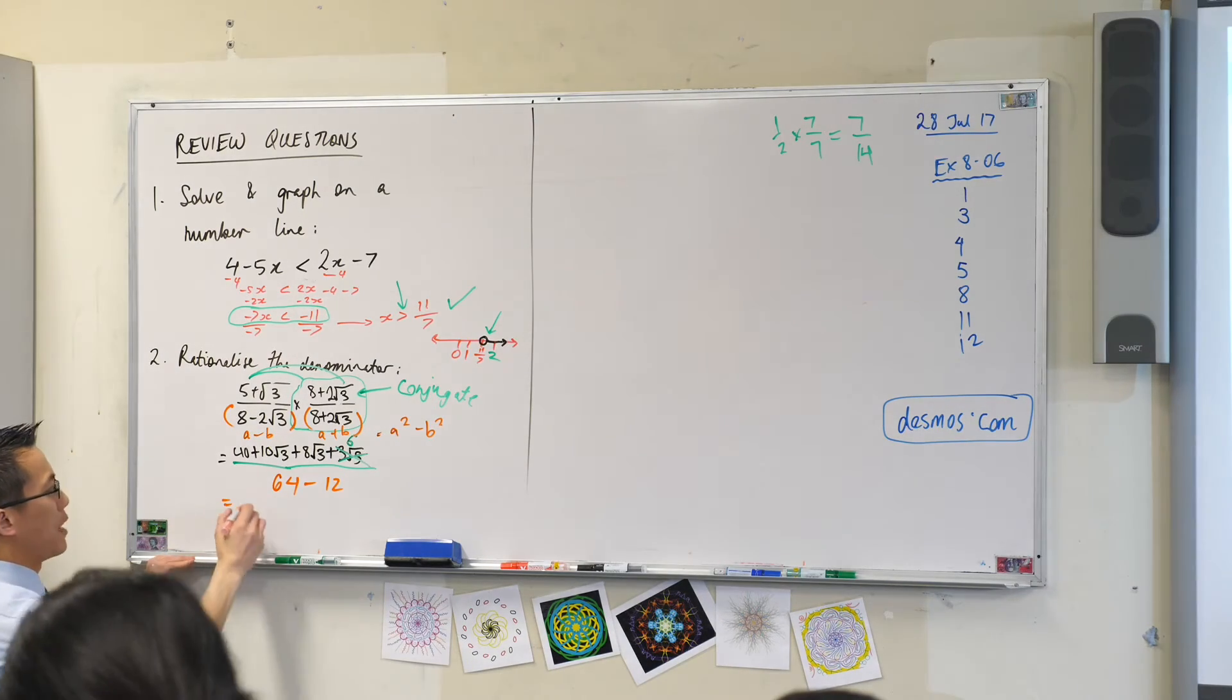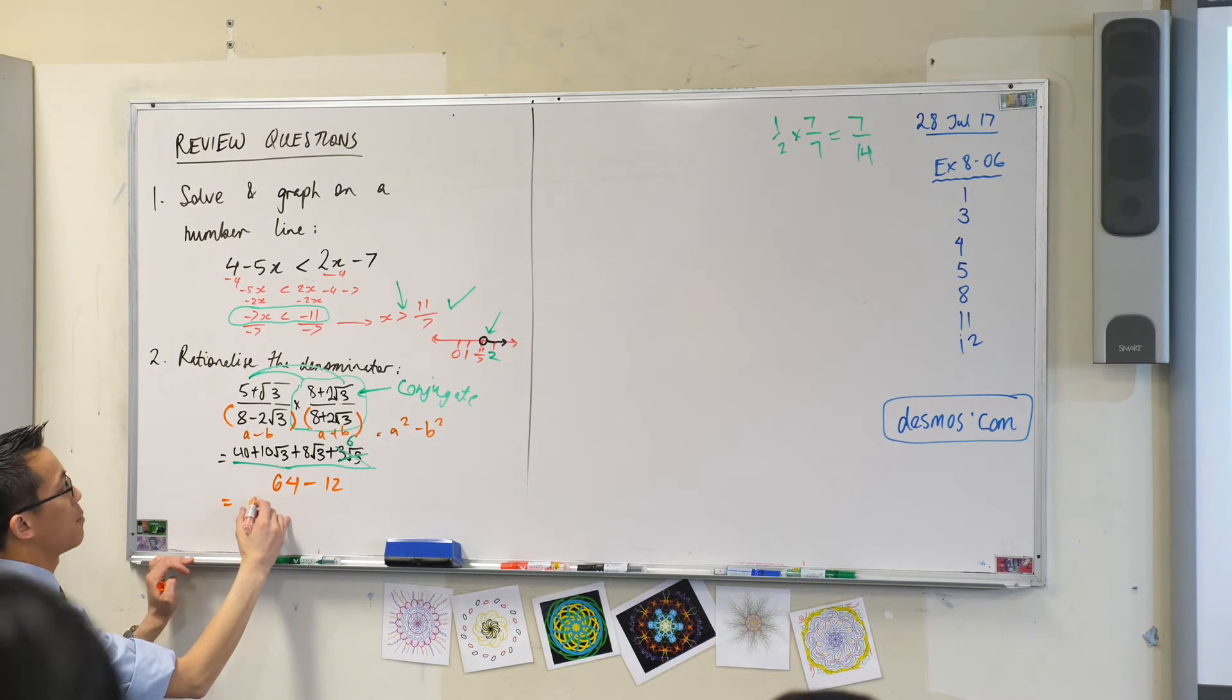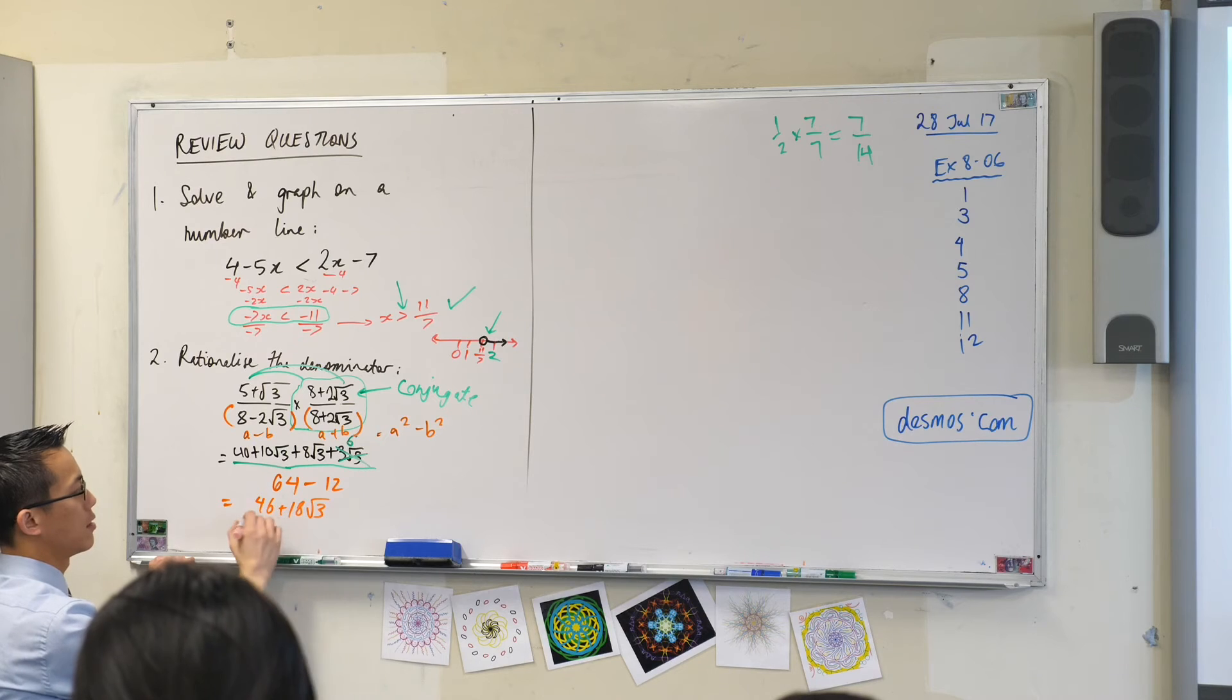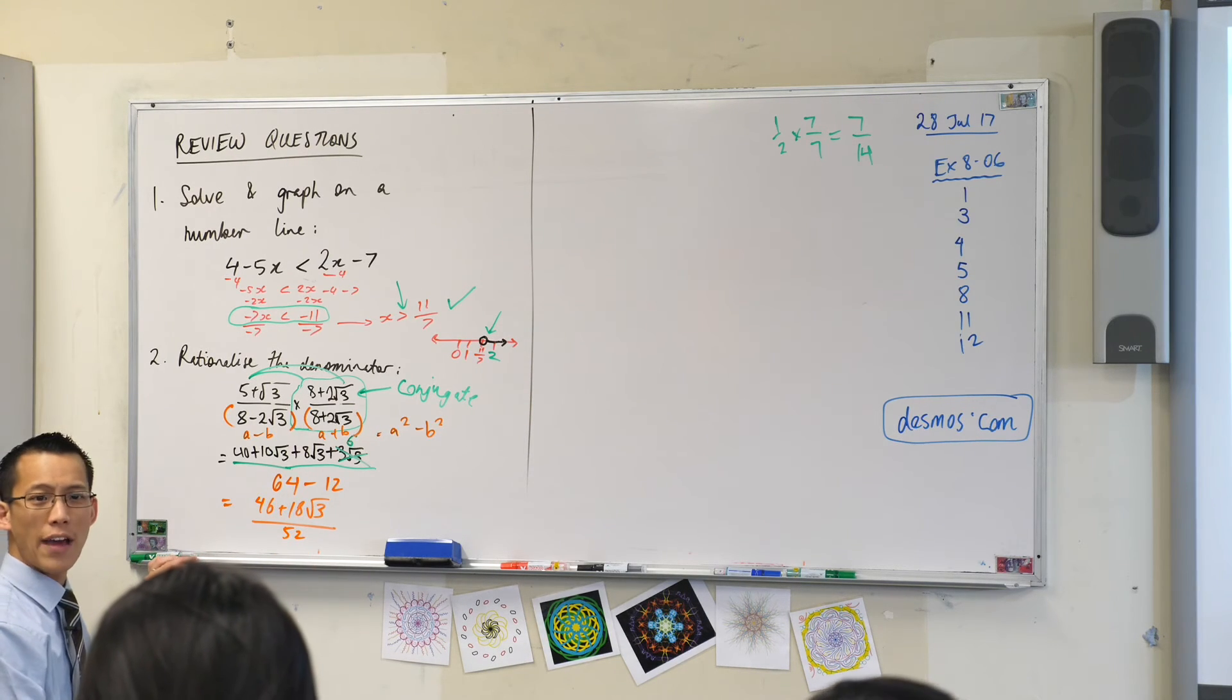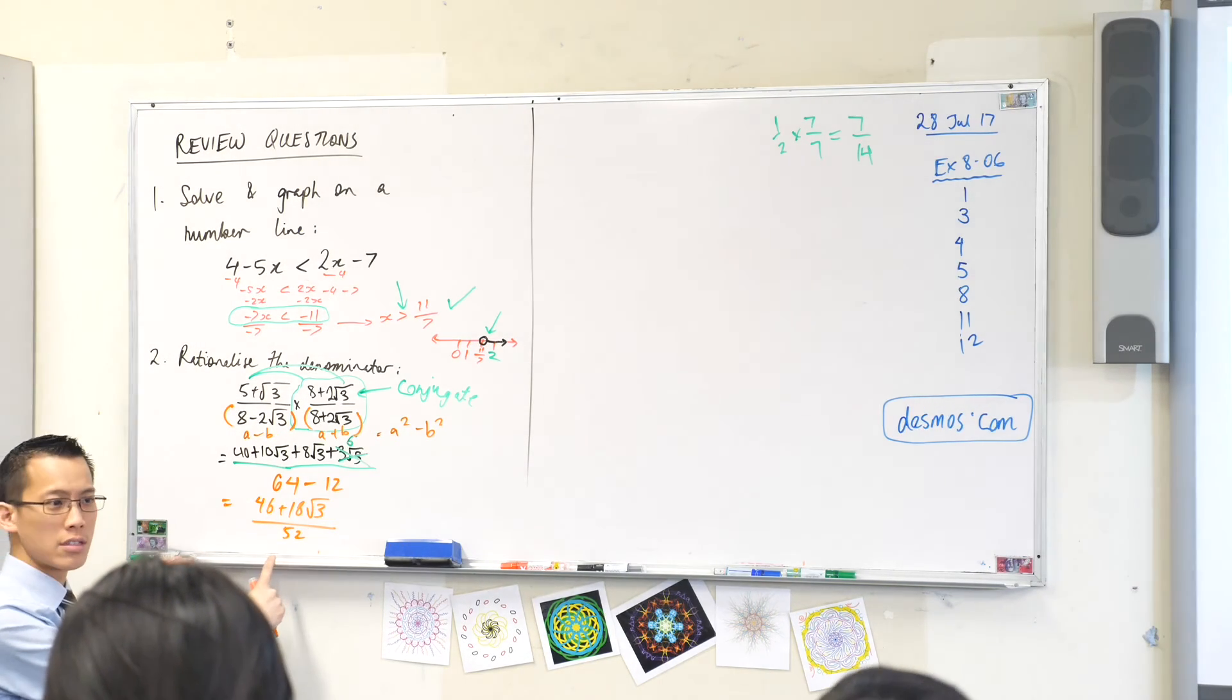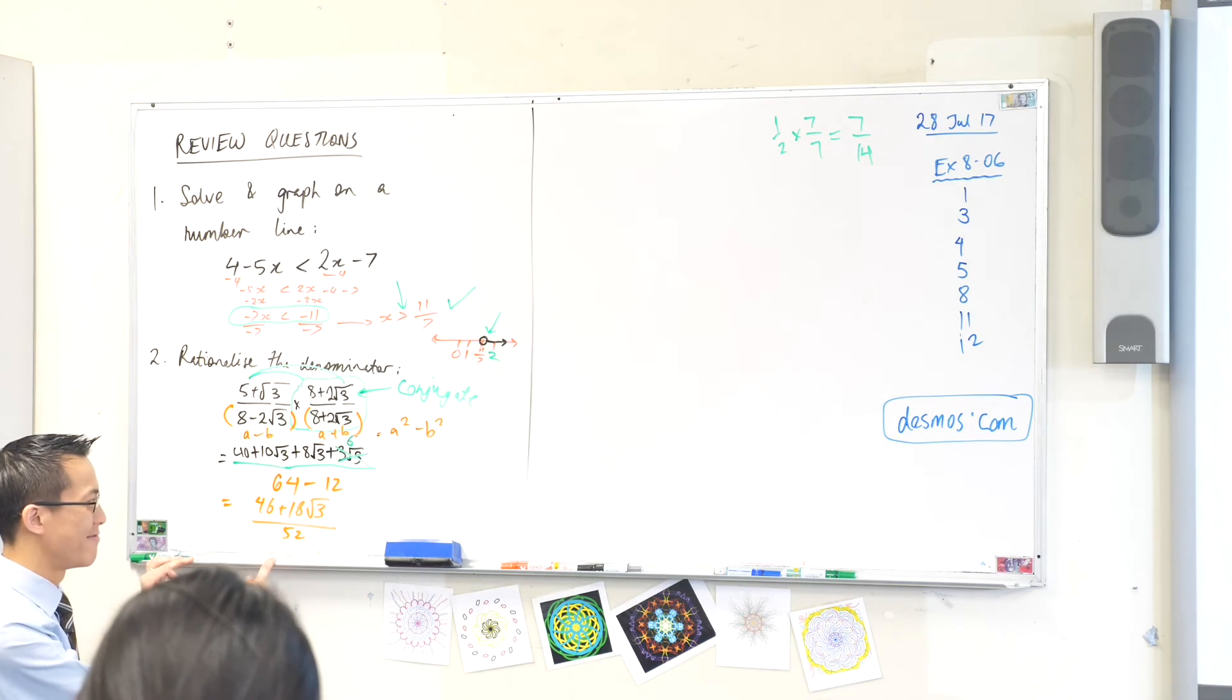So from here we need to tidy up a little bit, but just for the sake of time I'll complete it for you. Looks like that's going to be 46 plus that divided by this. Are there any common factors that we can take out? 46 plus 18 root 3 on 52. Is there anything I can cancel?